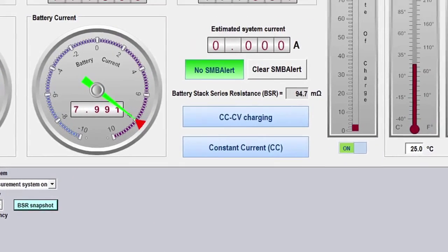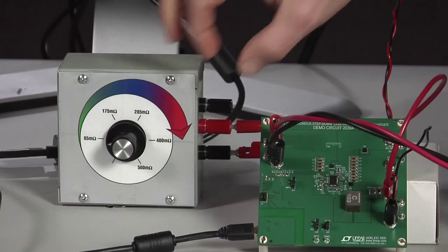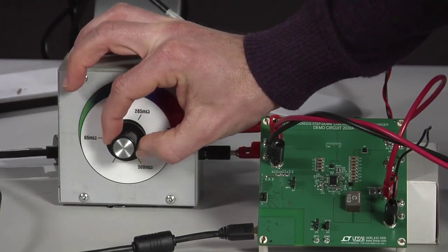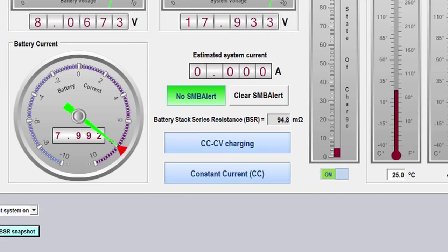Going back to the GUI configuration tab, I can take a BSR snapshot. It currently reads 95 milliohms. With my 50 watt rheostat, I can increase the series resistance by approximately 100 milliohms and take another BSR snapshot. The measured value increased to 205 milliohms and an SMB alert showing that the BSR resistance limit is exceeded is set.